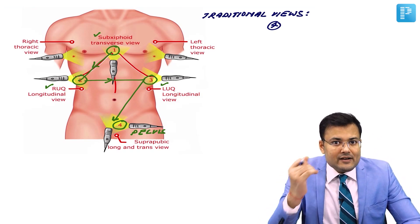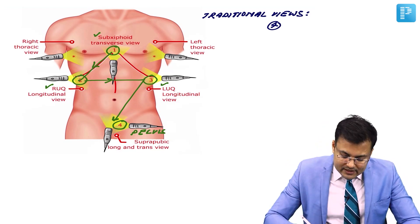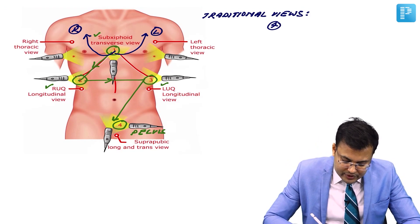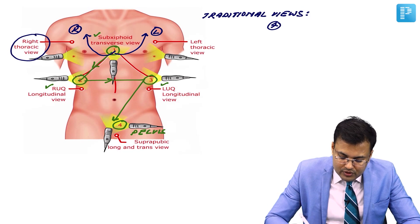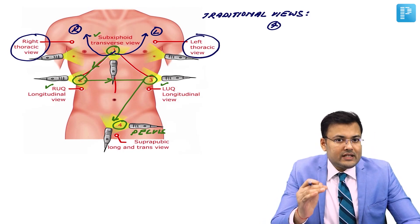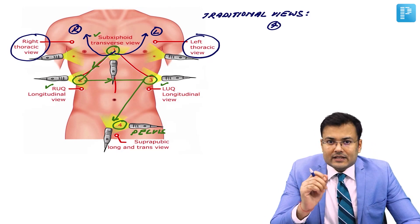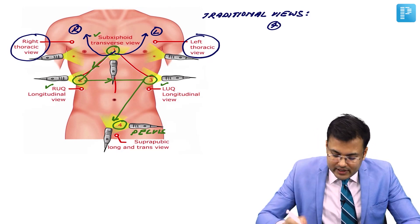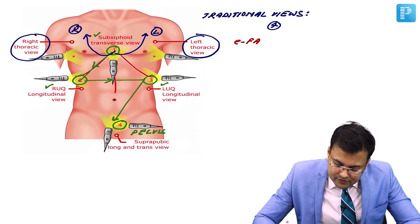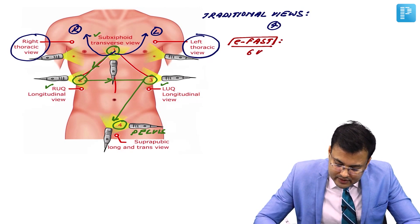E-FAST stands for Extended FAST. FAST is extended to include the right thoracic and left thoracic views. In E-FAST, there are a total of six views — the original four plus the two additional thoracic views.